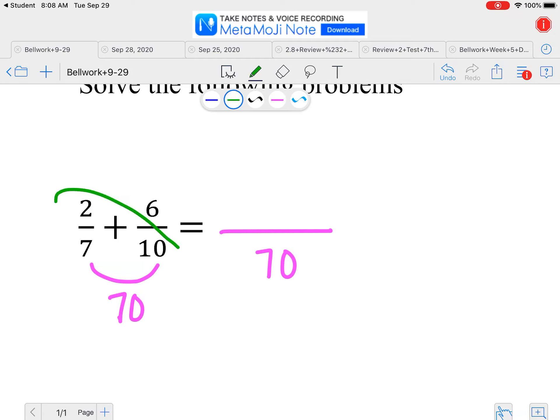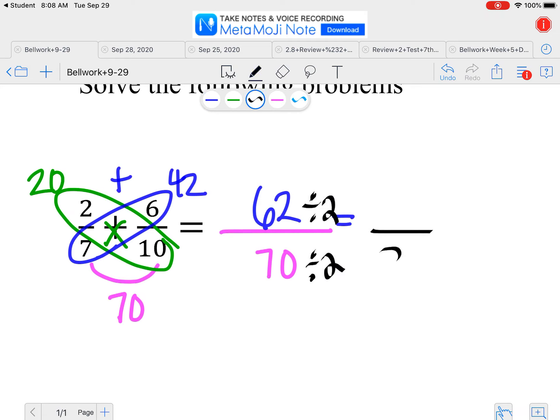Then you can multiply these numbers diagonally. 10 times 2 is 20, 7 times 6 is 42, and then we would add those together. So 20 plus 42 is 62. Those are both even, so I can divide them by 2, which makes 35 for the bottom and 31 for the top.